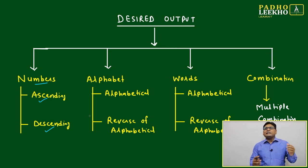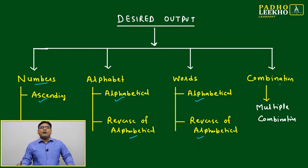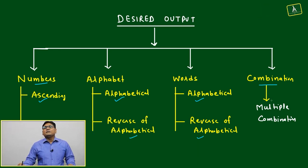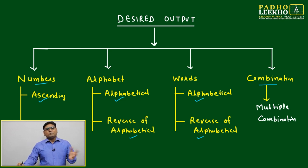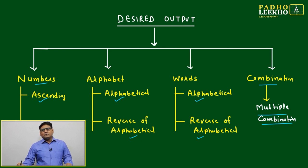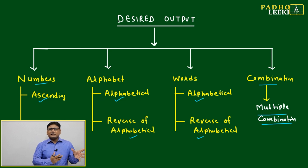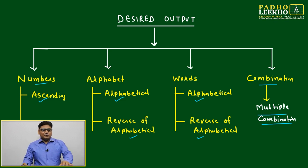If it is alphabet, again alphabetically or reverse of alphabetically. If it is words, again alphabetically or reverse alphabetically. Many times you will find it is a combination of words, alphabets, and numbers. Then you will get multiple combinations of ascending, descending, or jumping of numbers - whatever will be there, we'll look.